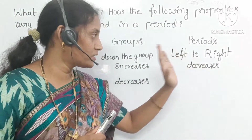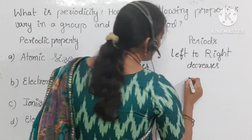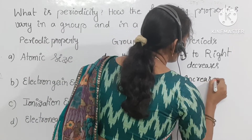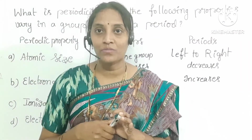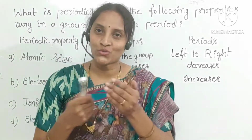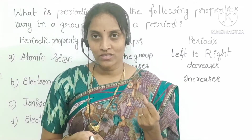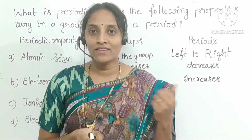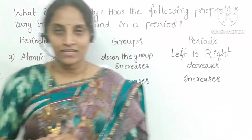In periods, electron gain enthalpy increases from left to right. The reason is smaller atomic size and more force of attraction towards the nucleus. When we add an electron from outside, the element tends to take it immediately, so more energy is released.